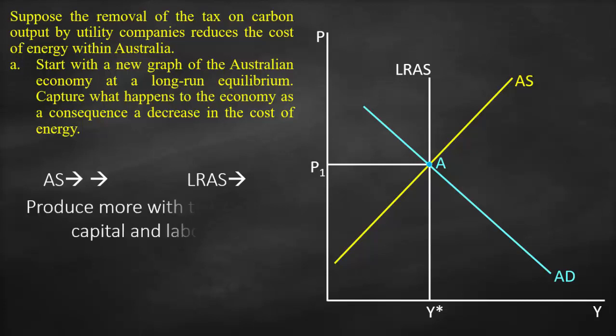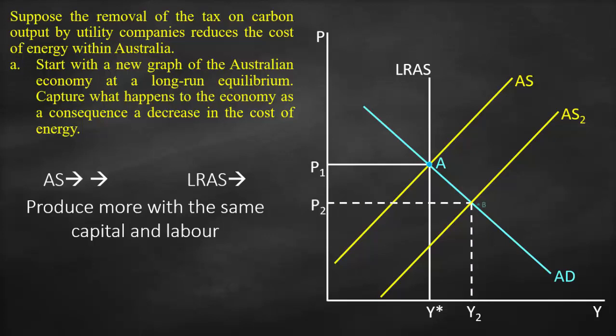Therefore our short-run aggregate supply will shift to the right with a bigger shift. We will have a new point of intersection between our new short-run aggregate supply curve and aggregate demand, which is point B. This would result in a higher output level Y2 and a lower price level P2.